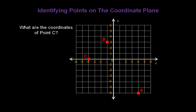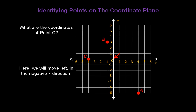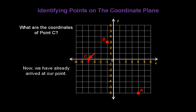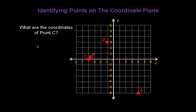Finally, what are the coordinates of point C? We always start at the origin, (0, 0), and move left or right first to line up with our point. Here, we're going to move to the left in the negative x direction, 4 places, so the x-coordinate is -4. Now we're already at our point, so we don't need to move up or down. That means our y-coordinate is 0. Point C is located at (-4, 0).